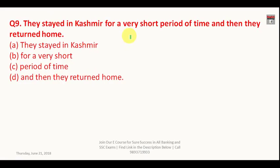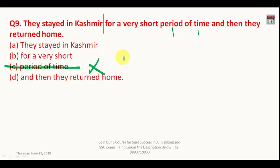Question number nine: 'They stayed in Kashmir for a very short period of time and then they return home.' 'Returned home' is correct for the verb. However, 'period' and 'time' both mean the same thing, making 'period of time' redundant. You should say either 'a very short time' or 'a very short period.' The erroneous part gives the answer C.